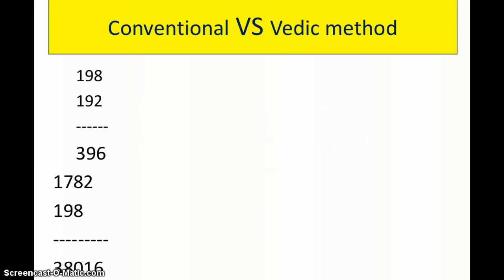We have the example of 192 × 198. Using the conventional method — already depicted on screen — it is a three-step process involving multiple multiplications and additions. Let's now see how it looks using Vedic mathematics.